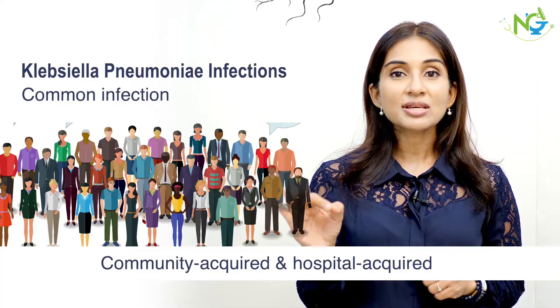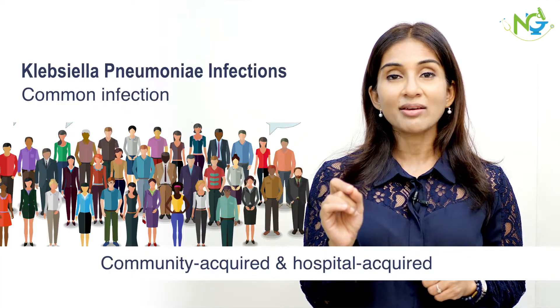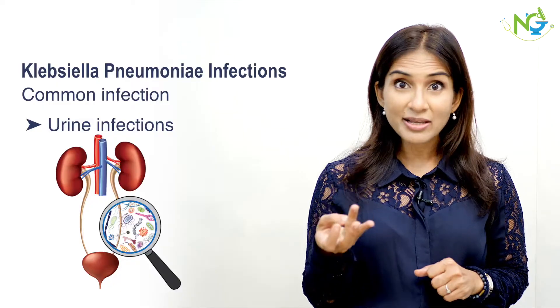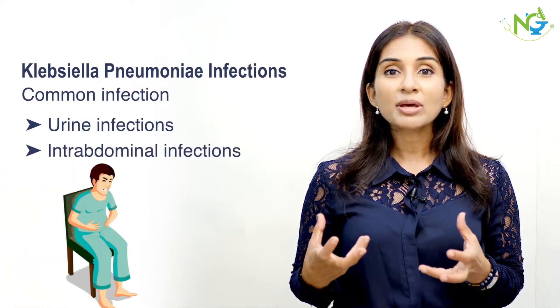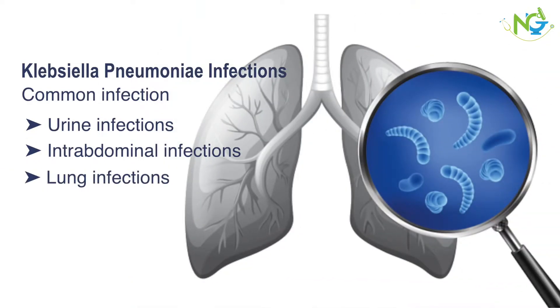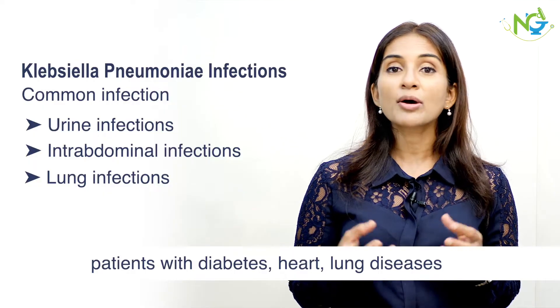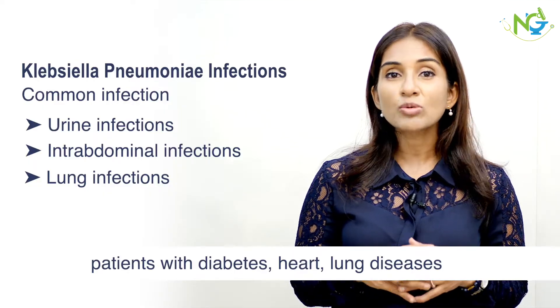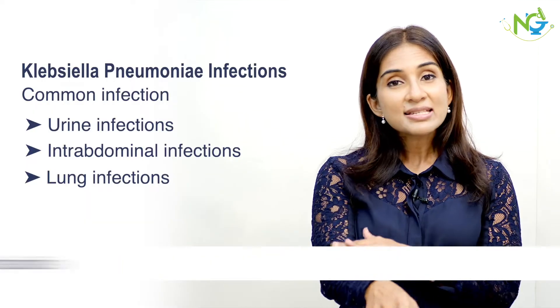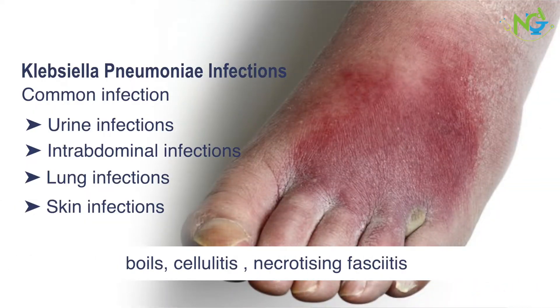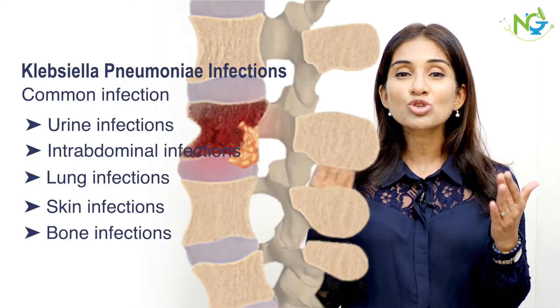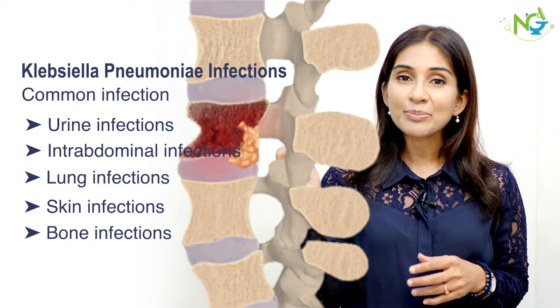In the community, many patients have an infection from this bacteria — like urine infections due to Klebsiella Pneumonia, intra-abdominal or liver infections, and lung infections, especially in patients with diabetes or heart problems. They can have lung infections besides Streptococcus Pneumonia — from Klebsiella Pneumonia. Skin infections like cellulitis, abscess, or necrotizing fasciitis, and bone infections, especially after trauma, road traffic accidents, or implants, are also very common. It can cause infection anywhere from brain to toe.